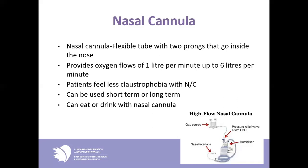There's also a high-flow nasal cannula, which you would primarily see in the hospital. This can deliver high flows — 25, 30, 40 liters per minute of oxygen with humidity — for patients whose oxygen demands are very high and not met by a standard nasal cannula. A special flow meter and special nasal prongs are used to deliver the high flow.